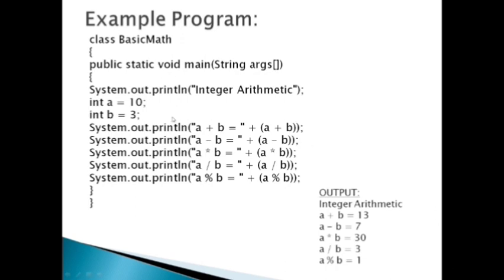The value of 10 is assigned to variable A and the value of 3 is assigned to variable B. I am performing the arithmetic addition operation on A and B. The output will be 13, so it is printed in the output as A plus B is equal to 13. 10 plus 3 gives the value 13.